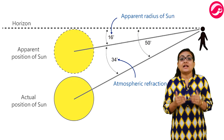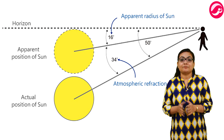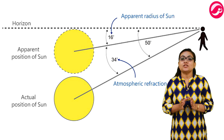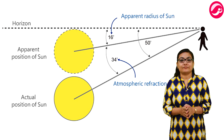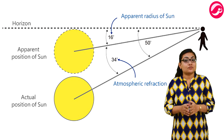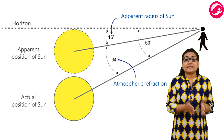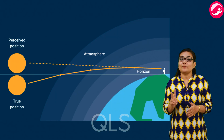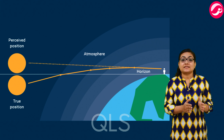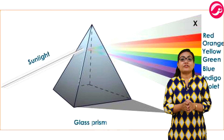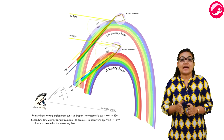You must have observed advanced sunrise and delayed sunset. The Sun is visible to us about two minutes before the actual sunrise and about two minutes after the actual sunset, because of atmospheric refraction. By actual sunrise we mean the actual crossing of the horizon by the Sun. The time difference between the actual sunset and the apparent sunset is about two minutes. The apparent flattening of the Sun's disk at sunrise and sunset is also due to the same phenomenon.